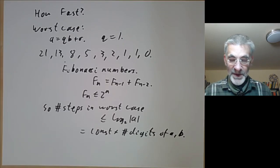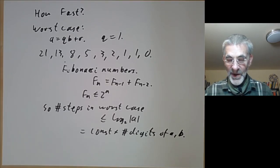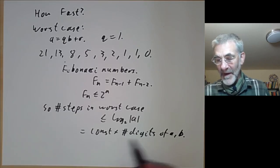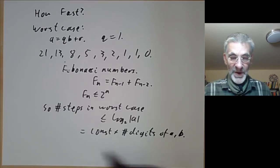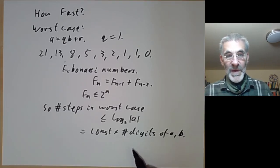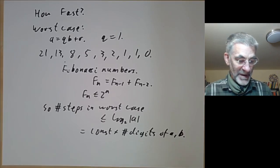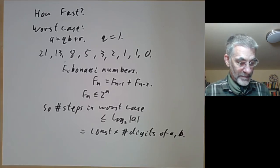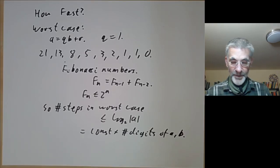This is actually a really fast algorithm — it works fine even for numbers with several million digits. You could do it by hand if a and b were, say, several million, without too much trouble.